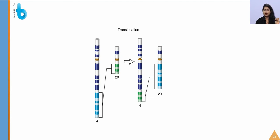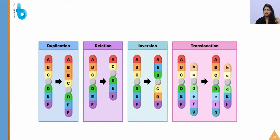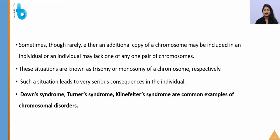Duplication is another structural change where repetition of a gene occurs. Failure of cytokinesis after telophase results in polyploidy — an increase in whole chromosome sets — which is often seen in plants. In human beings, there are 46 chromosomes: 22 pairs of autosomes and one pair of sex chromosomes. Defects in chromosome number in humans include Down syndrome, Turner syndrome, and Klinefelter syndrome.